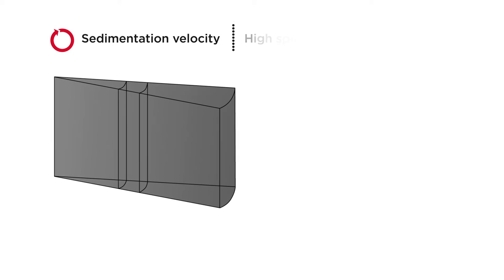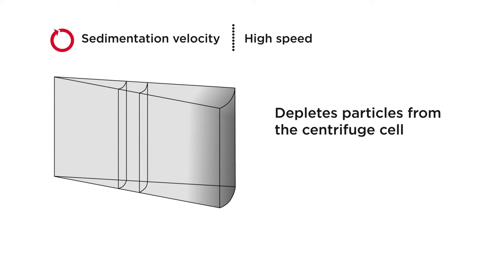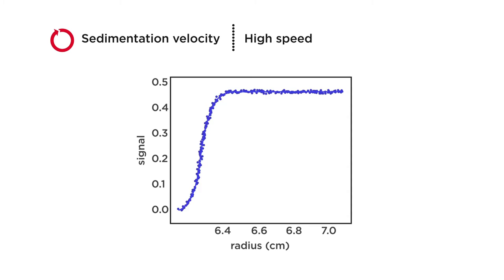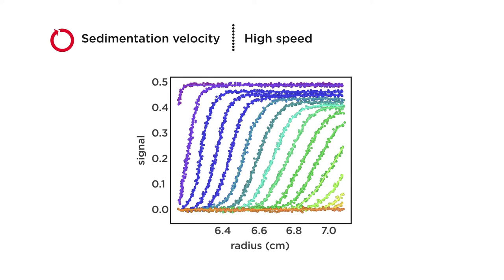Sedimentation velocity is performed at high speed. The high speed depletes particles away from the center of the rotor and creates a pellet at the bottom of the cell. Each line on the graph represents a wavelength scan. As the protein sediments towards the bottom of the centrifugation cell, the wavelength flattens.